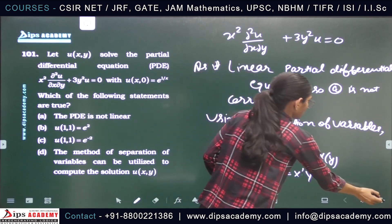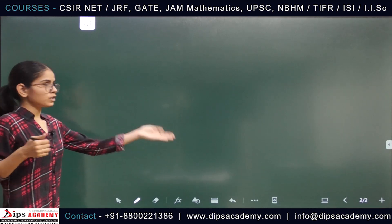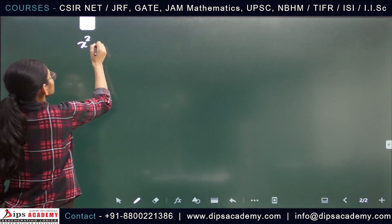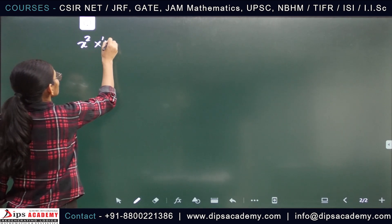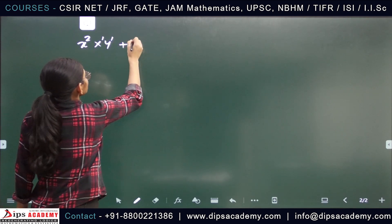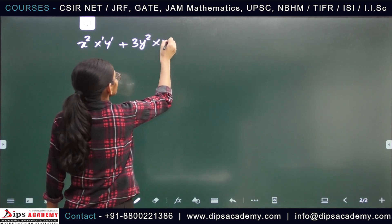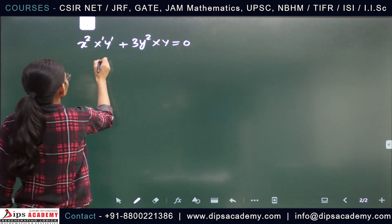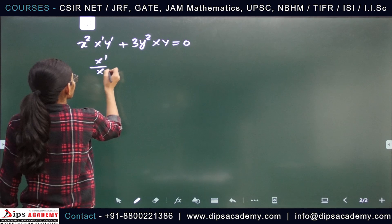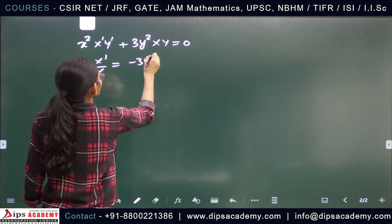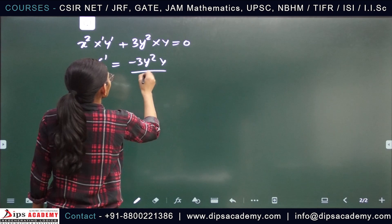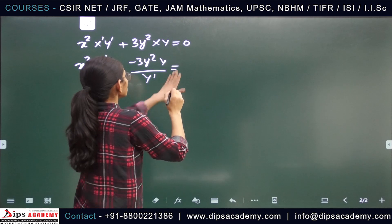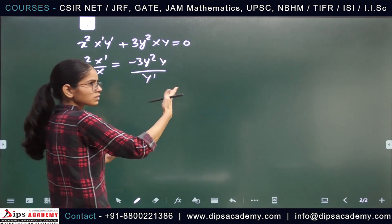Now putting the values in the given partial differential equation, we will be getting x squared X' Y' plus 3y squared X times Y equals to 0. By separating the x and y terms we will be getting X' divided by X equals to minus 3y squared Y divided by Y', and both equal to some constant k.